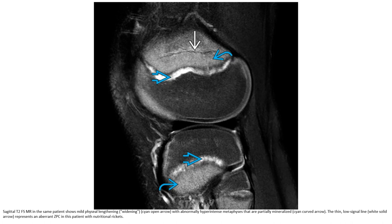T2-weighted MRI in the same patient shows physeal lengthening with abnormal hyperintense metaphysis that is partially mineralized. The low signal line represents an apparent zone of provisional calcification in this patient with nutritional rickets.